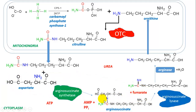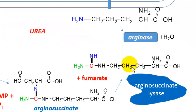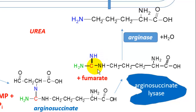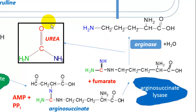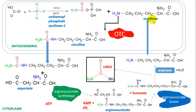After arginosuccinate lyase cleaves arginosuccinate, you get fumarate and arginine. Arginine is a standard amino acid encoded by the genetic code. Arginase then cleaves arginine via hydrolysis, with water hydrolyzing the bond to yield the non-standard amino acid ornithine as well as the final product, urea. The ornithine is transported back into the mitochondrial matrix to perpetuate the urea cycle, with citrulline transported out and ornithine transported back in.